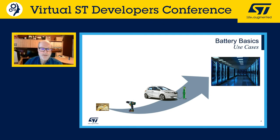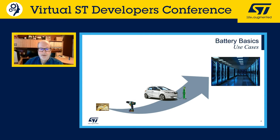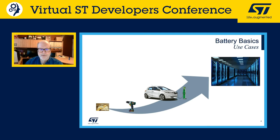Primary, or single-use, disposable batteries are used once and discarded as the electrode materials are irreversibly changed during discharge — a common example being alkaline batteries used in flashlights. Secondary, or rechargeable, batteries can be discharged and recharged multiple times using an applied electric current. Examples include lead-acid batteries in vehicles and lithium-ion batteries in laptops and mobile phones. Batteries range from miniature hearing-aid cells to room-sized banks powering data centers.